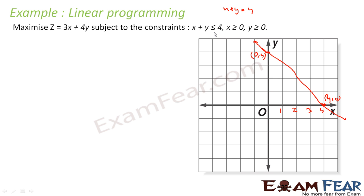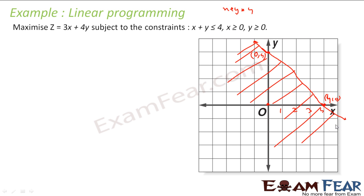Now x plus y is less than 4 means I am looking for a region. This line divides the plane into two parts. You put any point — try (0, 0): 0 plus 0 is less than 4, yes it satisfies. That means x plus y less than 4 is this area — this whole region will be my x plus y less than 4.